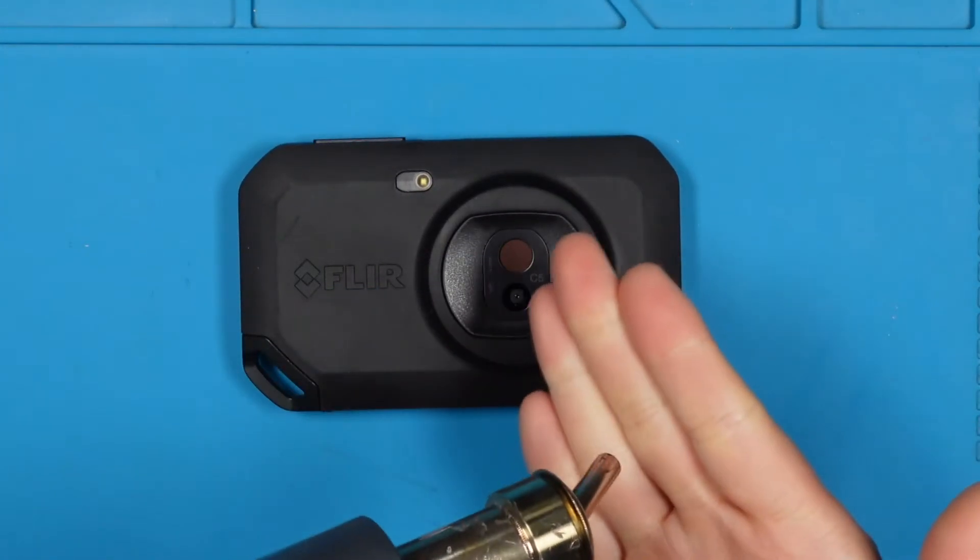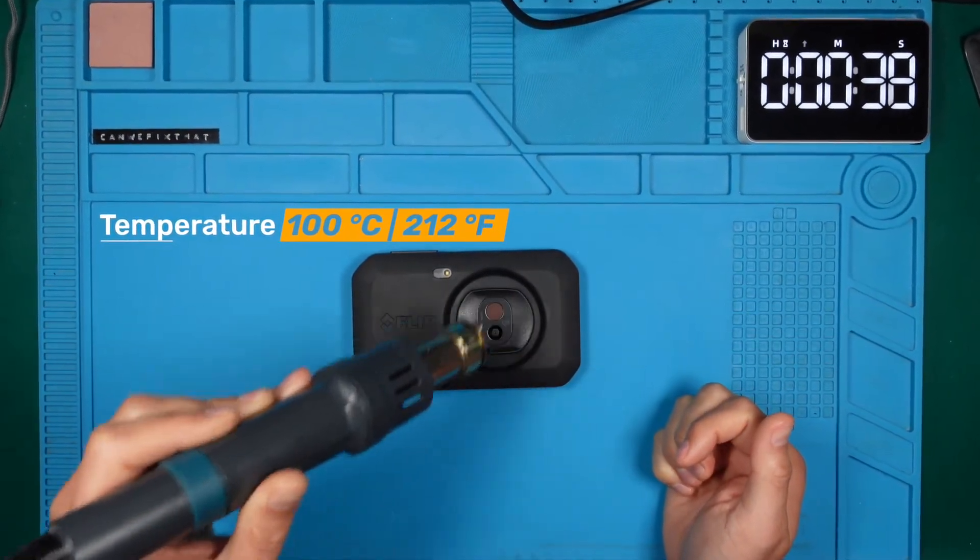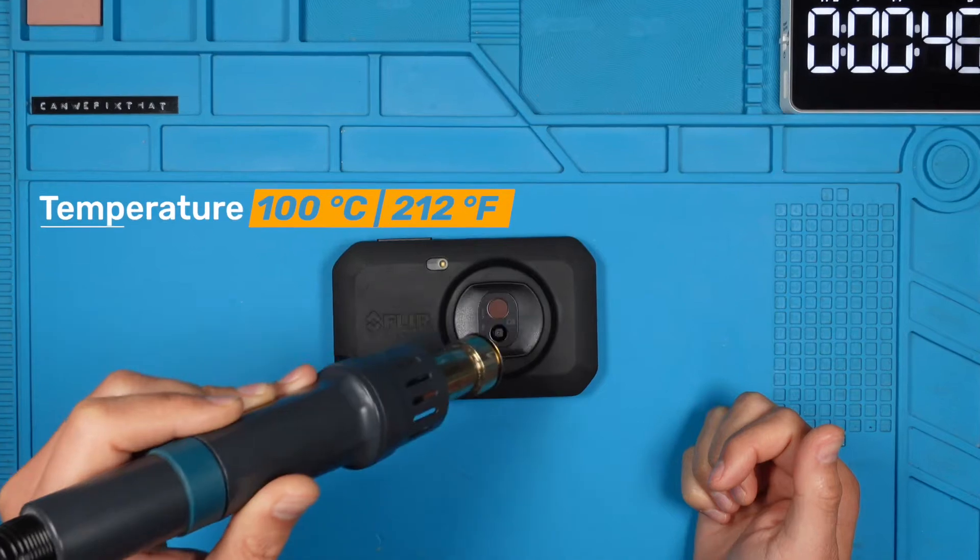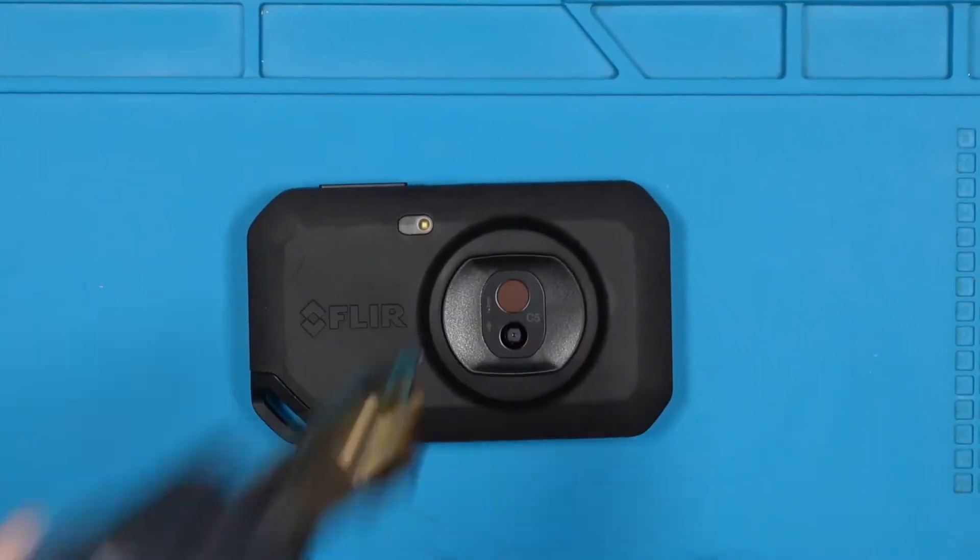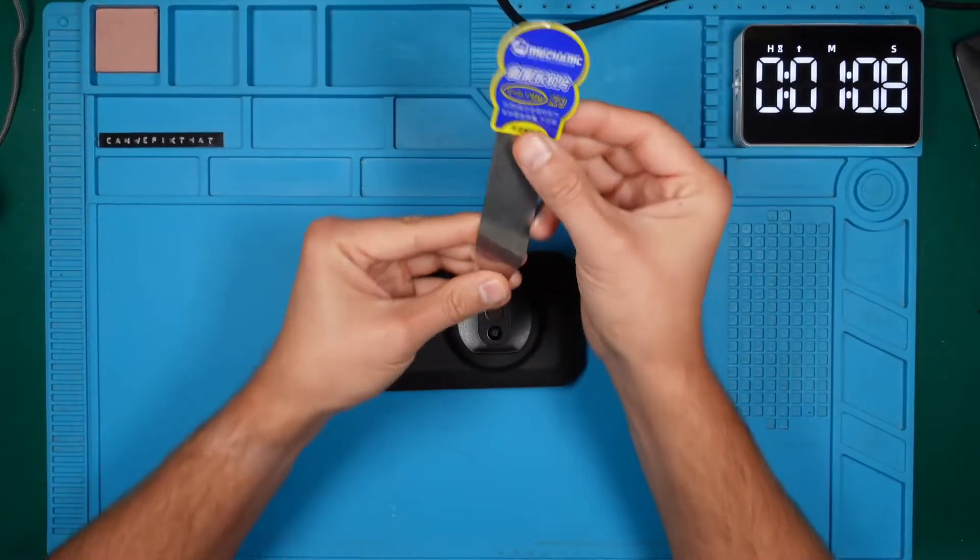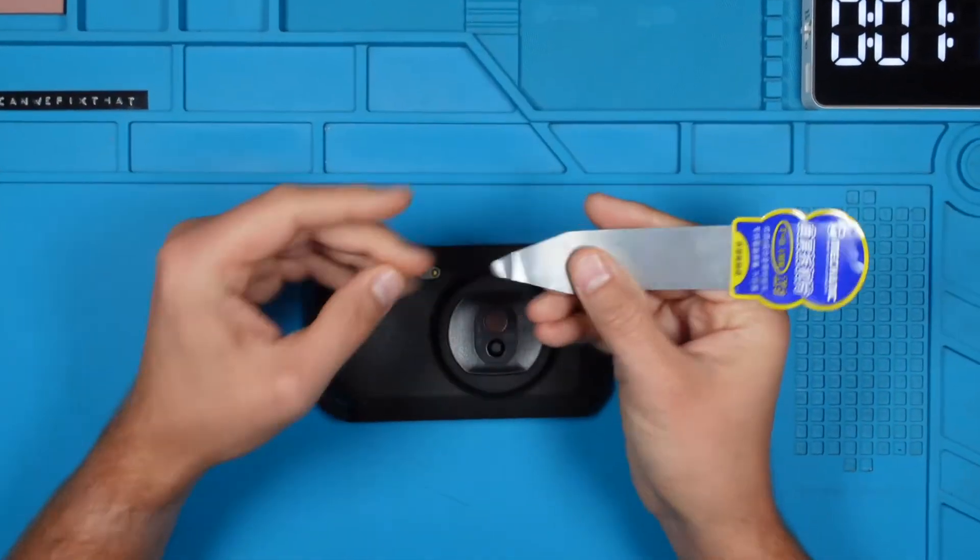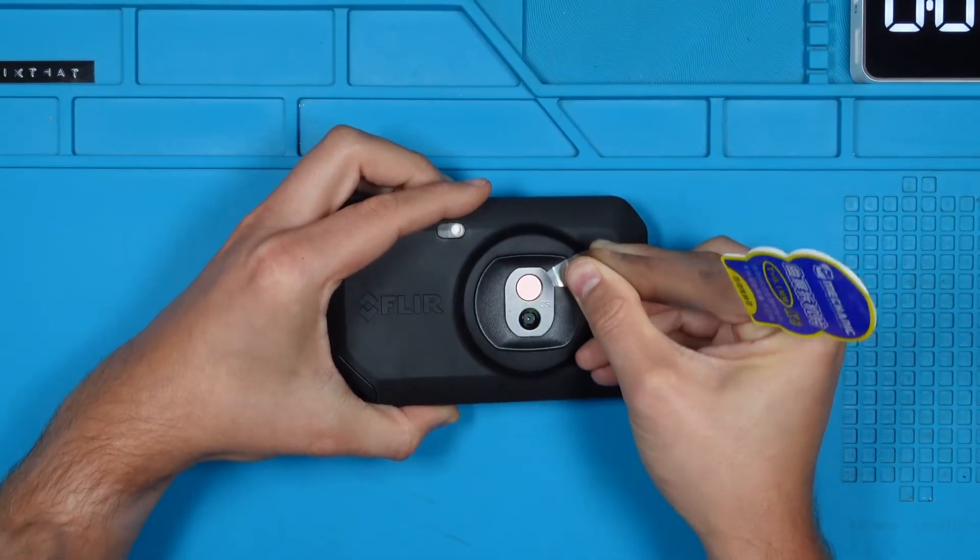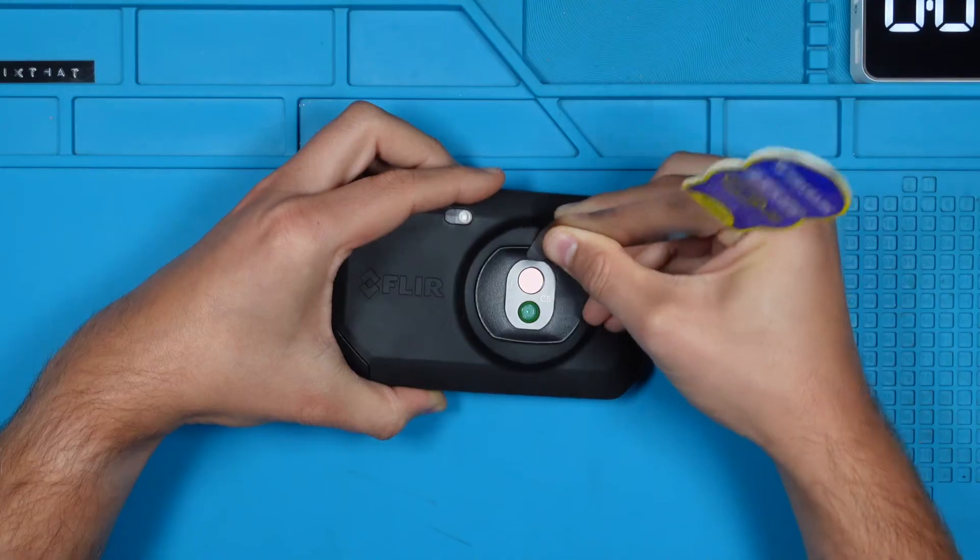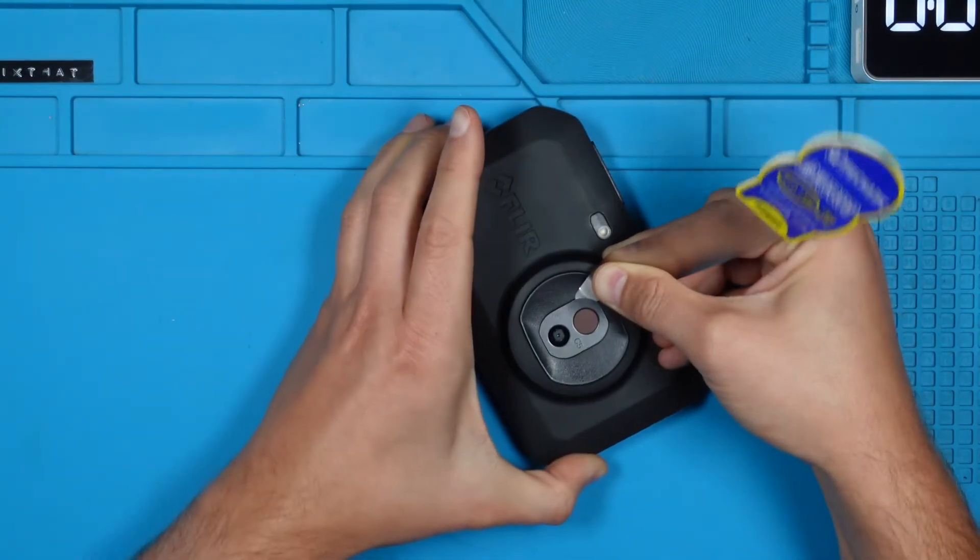We will gently soften the glue beneath the metal cover using the low setting on our hot air station. Though a hairdryer would work just as well for this step. To pry up the metal cover, we need a slim tool to slide beneath it. I'll be using a 0.1mm disassemble sheet, typically used for lifting curved displays. If you don't have one of these on hand, a simple sheet of paper might do the trick as a makeshift alternative.